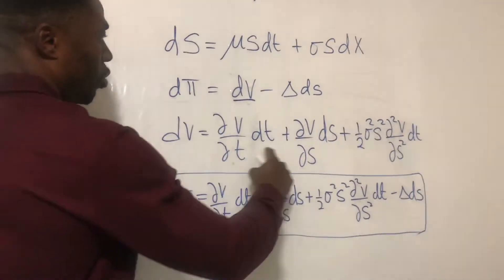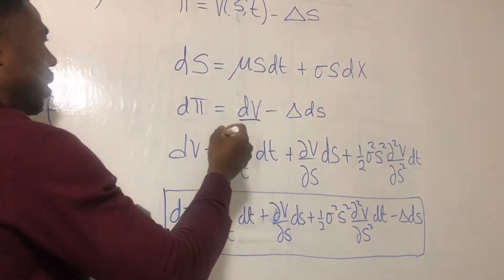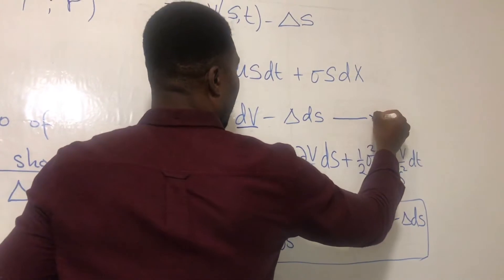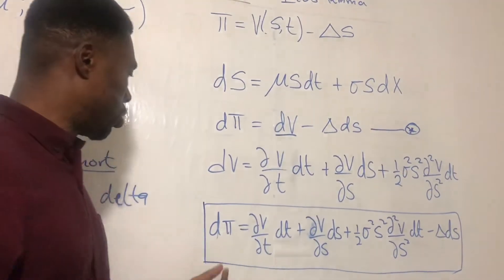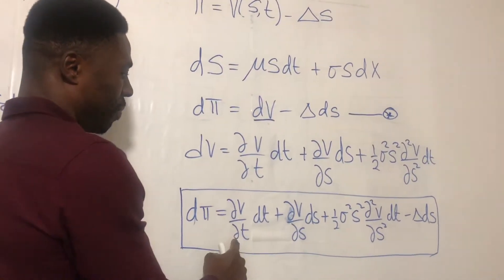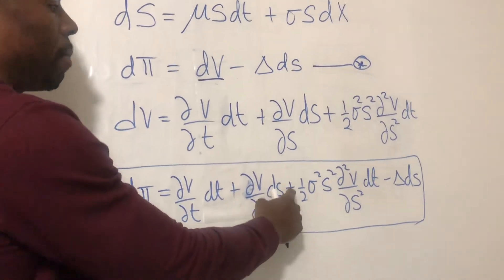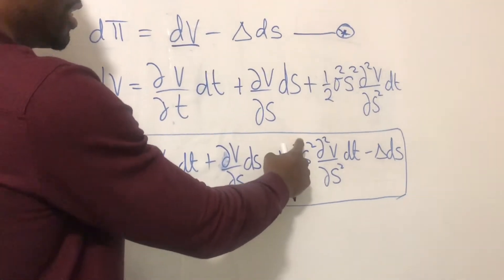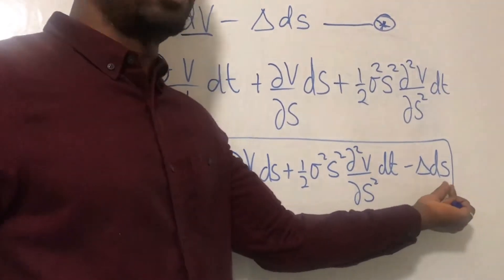Now, all we need to do from here is to substitute the V into this equation we've got here. So if I call this equation star, we are going to substitute this into equation star. So we have dπ equals ∂V/∂T dt plus ∂V/∂S dS plus one half σ² S² ∂²V/∂S² dt minus delta dS.